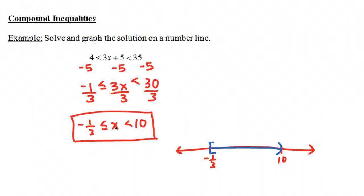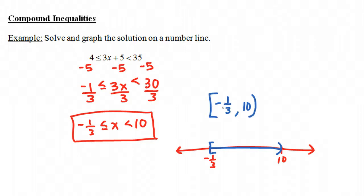In another video, we had our solution as the interval from negative one-third to 10, closed at the left endpoint negative one-third and open at 10. In interval notation, this would be the interval from negative one-third to 10, open at 10 and closed at negative one-third. So this would be the answer in interval notation.